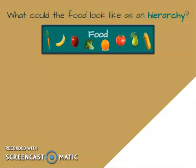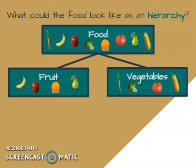Carrots, bananas, apples, broccoli, oranges, tomatoes, pears, and corn are all food, so they all fit in the first box. But if I want to get more specific, I could say some of them are fruits and some are vegetables. On the left we have our fruits — bananas, apples, oranges, and pears. On the right we have our vegetables — carrots, broccoli, tomatoes, and corn. While we've classified them and found how they're different, they're still all food — just different types of food.